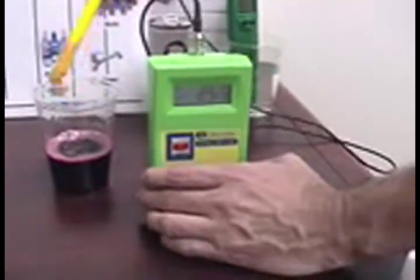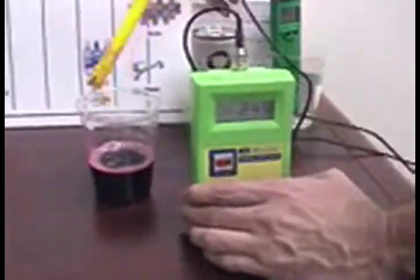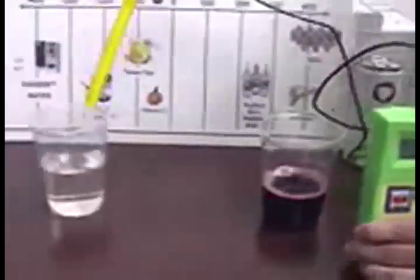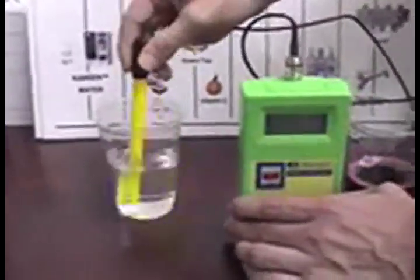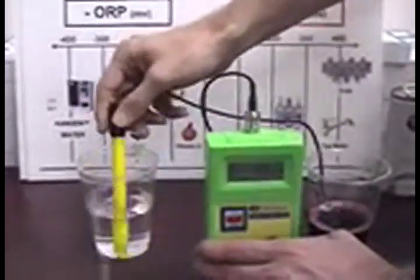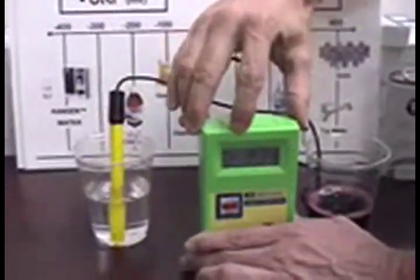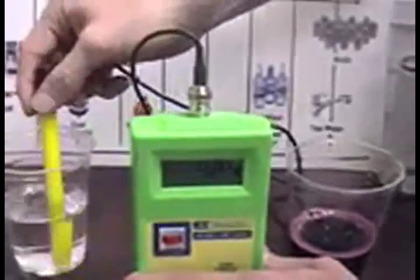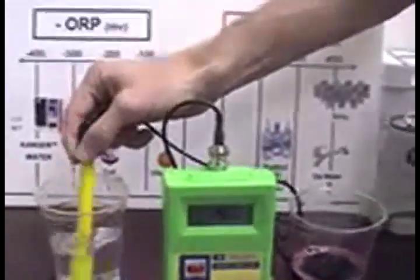Now, I'm just going to, before I put this into the Kangen water, I'm just going to quick dip. Now, let's see what kind of free radical or antioxidant we have in this water. Is that a positive or a negative? There we go. So, we have a negative. So, it's a negative. Negative 450. Negative 500. Something like that.